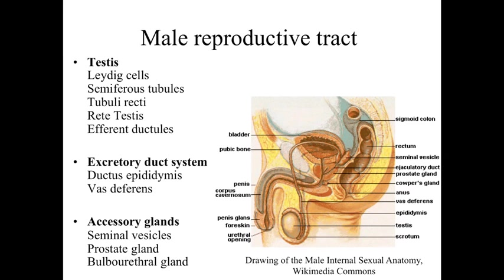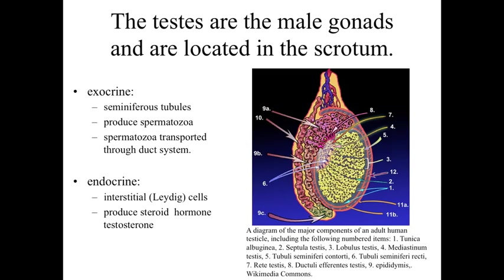We'll also talk very briefly about the penile structure at the end as a structure involved with delivering spermatozoa during internal fertilization. To focus in on the majority of the structures and function associated with this system, the majority is going to be the testes. The testes are the male gonads, and they run parallel to the ovaries that we just finished discussing within the female reproductive system.